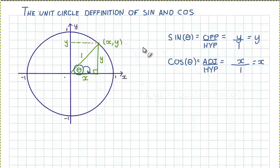This is the really important thing that we want you to remember: sin θ equals y and cos θ equals x. So we can write this point here on the unit circle, we can write this point x, y as cos θ, sin θ.